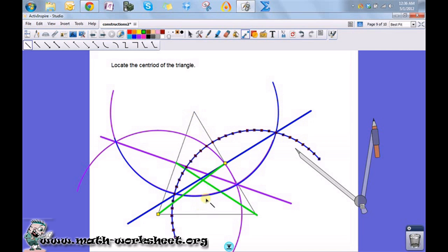In fact, if we had done the third median, which would be like in here, it would intersect through this point as well.